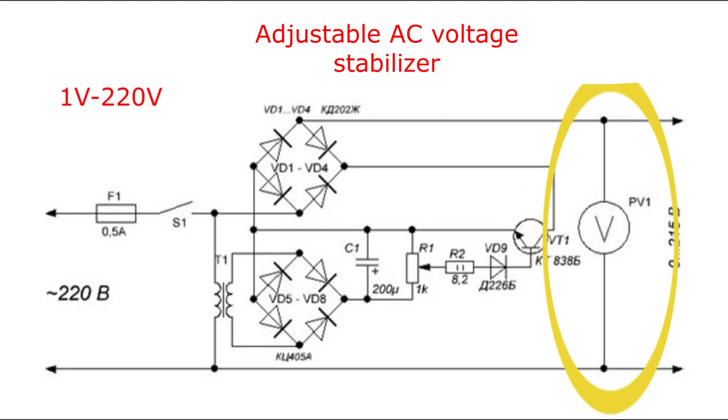The voltmeter must have a scale from 1V to 220V. This is a very simple circuit of an adjustable AC voltage stabilizer. With this circuit, we can regulate the output voltage from 0 to 220V, a very simple circuit of an electronic leder.